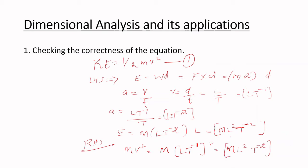So RHS and LHS have the same dimensional form. That means the equation kinetic energy equals half mv squared is dimensionally correct. We say 'dimensionally correct' because the constant half could not be evaluated by this method — that is one of the drawbacks of the dimensional method. Constants in the equation cannot be evaluated using this approach.